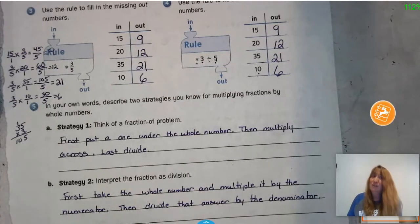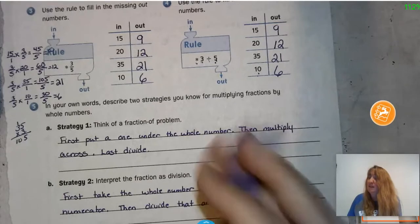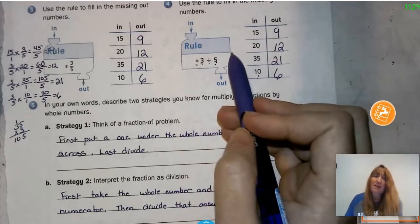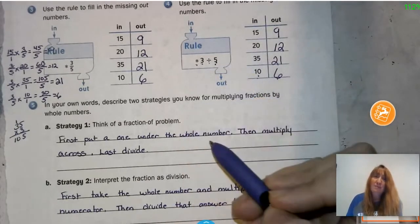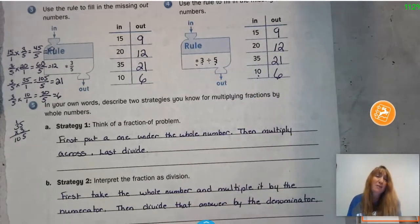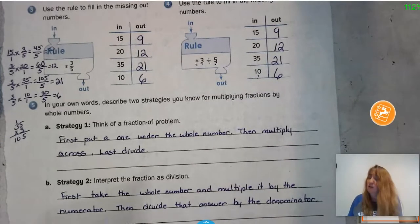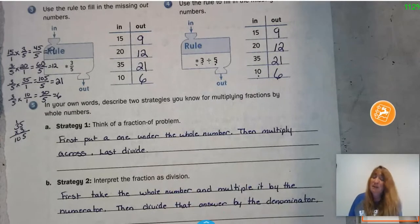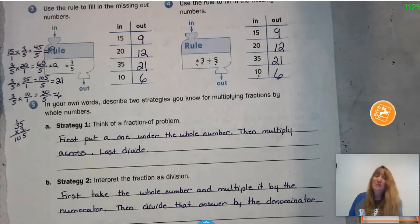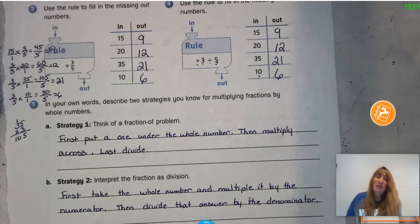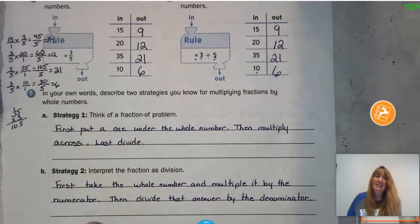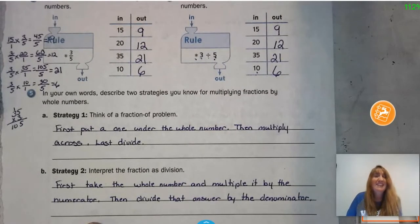As long as you multiply by the top and divide by the bottom, you'll get the correct answer. A way to remember this: 'divide by denominator' — both start with the letter D. Multiply by the top, divide by the denominator, and you'll be all set. You did a fabulous job and made really good connections today. I'll see you in our next lesson!